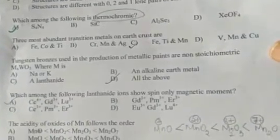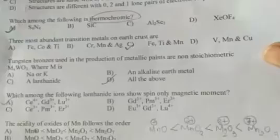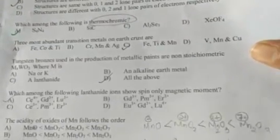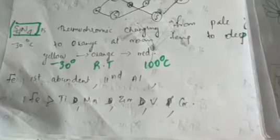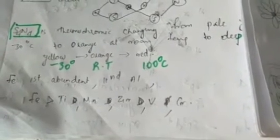The three most abundant transition metals on the Earth's crust: iron is the first most abundant, and the second question covers iron, titanium, and manganese.